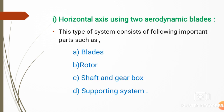Now we will discuss each type one by one. The first is the horizontal axis using two aerodynamic blades. This type consists of the following important parts. Generally, any wind machine consists of the same basic parts with little variation in blade construction or placement of the generator, gearbox, and other assembly. The basic parts are: blades, rotor, shaft, gearbox, and supporting system.